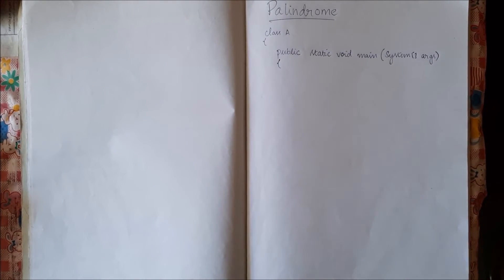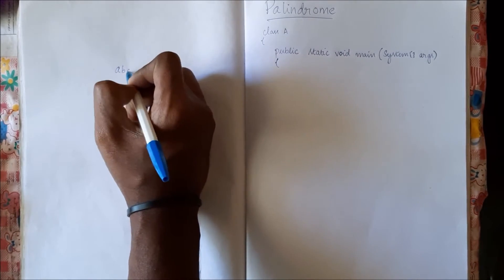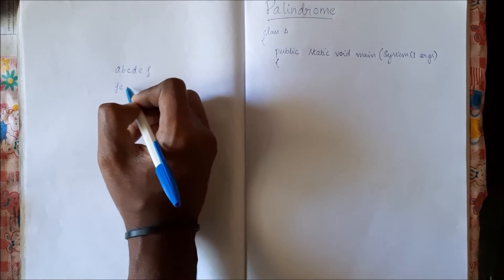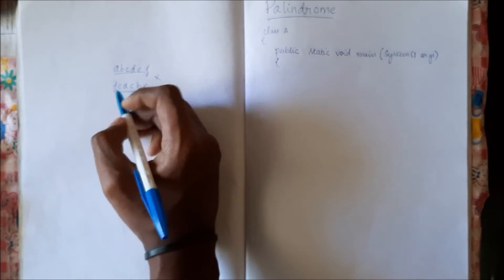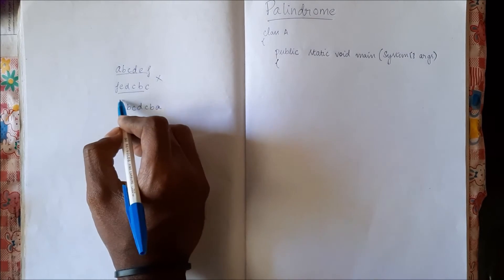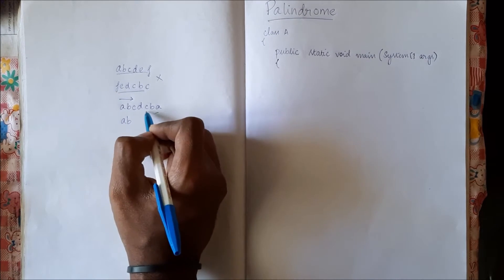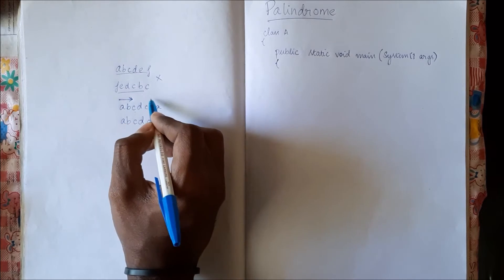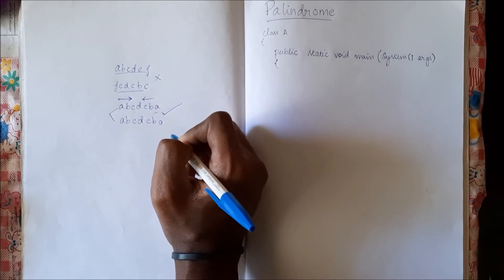In this video let us see how to check if a given string is palindrome or not. If you have a string say 'abcdef', the reverse of this string will be 'fedcba', so this string is not a palindrome. If you have another string like 'abcdcba', when read forward or in reverse order it is the same, so this is called a palindrome.